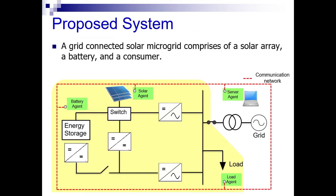The proposed system for reinforcement learning application is a grid-connected solar microgrid comprising a solar array, a battery, and a consumer. To introduce agent-based control, four agents are assigned as shown.